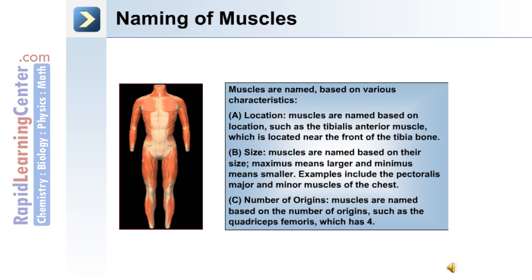Muscles are named based on location, such as the tibialis anterior muscle, which is located near the front of the tibia bone. Regarding the muscle's size, maximus means larger and minimus means smaller. Examples include the pectoralis major and minor muscles of the chest.